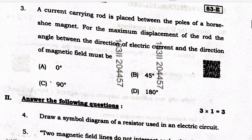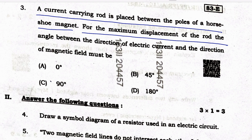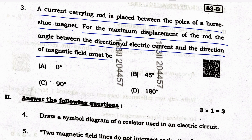Next question: a current-carrying rod is placed between the poles of a horseshoe magnet. For the maximum displacement of the rod, the angle between the direction of electric current and the direction of the magnetic field must be — option A: 0°, option B: 45°, option C: 90°, and option D: 180°. The correct answer is option C, 90°.